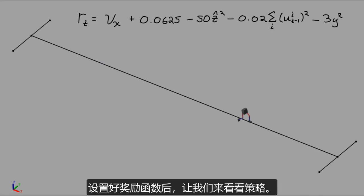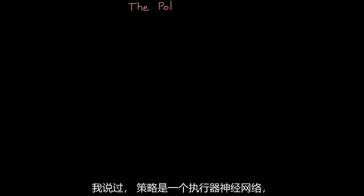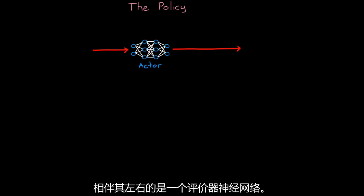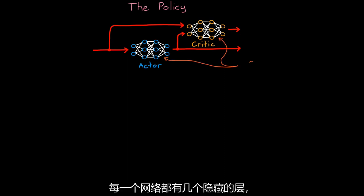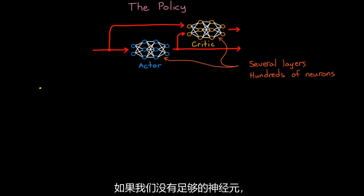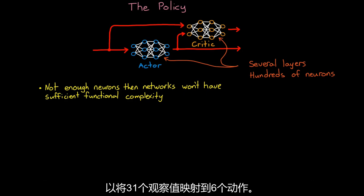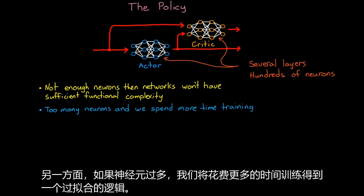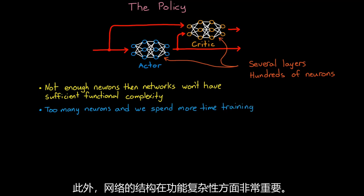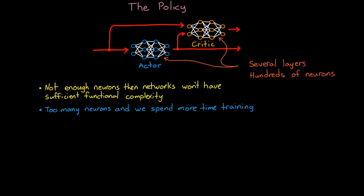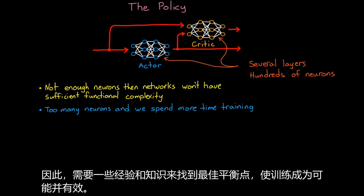So with the reward function set, let's move on to the policy. I've already stated that the policy is an actor neural network and along with it is a critic neural network. And each of these networks have several hidden layers of hundreds of neurons each. So there's a lot of calculations that go into them. If we don't have enough neurons, then the network will never be able to mimic the high dimensional function that is required to map the 31 observations to the six actions for this non-linear environment. On the other hand, too many neurons and we spend more time training the excessive logic. In addition, the architecture of the network is really important in functional complexity. These are things like the number of layers and how they're connected and the number of neurons in each layer. So there is some experience and knowledge needed to find that sweet spot that makes training possible and efficient.